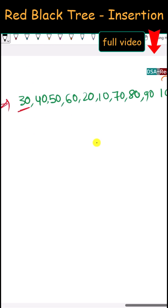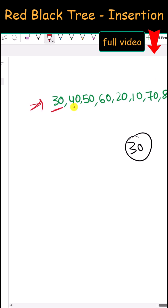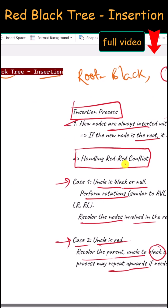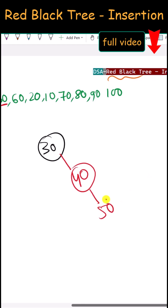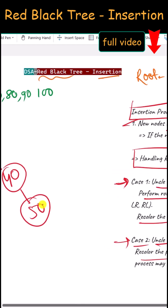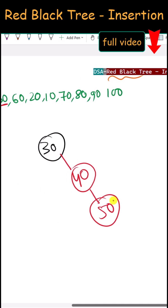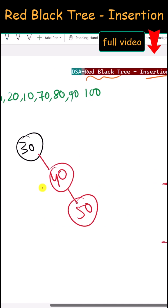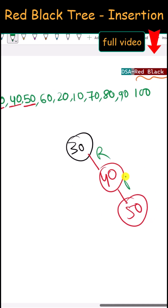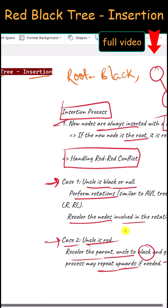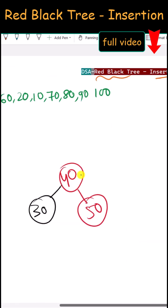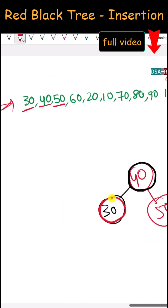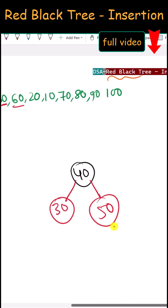First we insert 30. Since 30 is the root node, it will have the black color. Next, 40 is inserted with the color red and there is no red-red conflict. Then we insert 50, which creates a red-red conflict. There is no uncle, so we perform a right-right rotation — rotating left — and exchange colors: node 40 becomes black and node 30 becomes red.